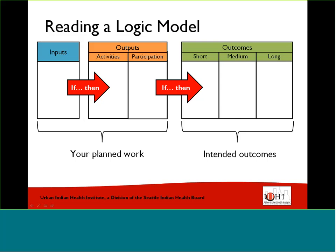When you're reading a logic model from left to right, you want to ask yourself why. Why are we providing nutrition classes? So that clients will have an increased knowledge of healthy foods. If you're reading starting from the outcomes on the right, you want to ask yourself how. How will clients have increased knowledge of healthy foods? By providing them with information through our nutrition classes. Asking the question 'what else' helps you identify gaps in your logic model.